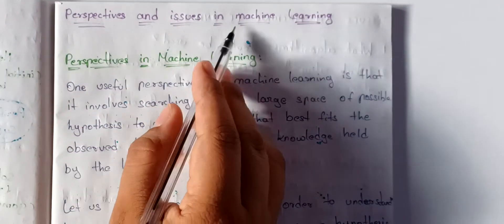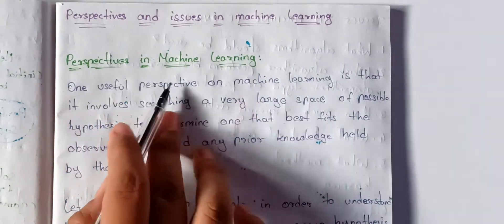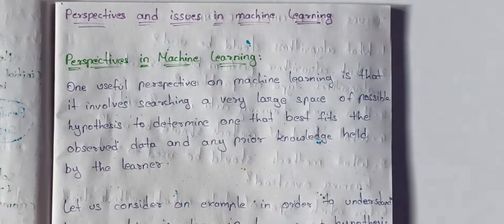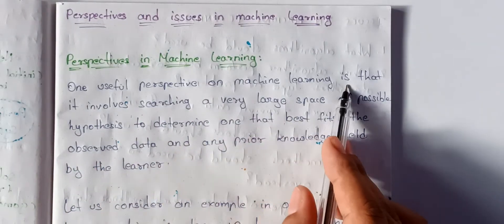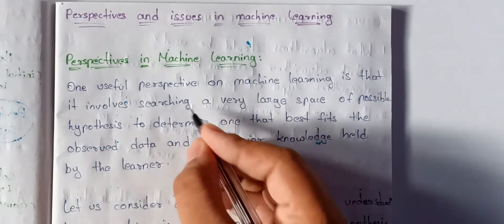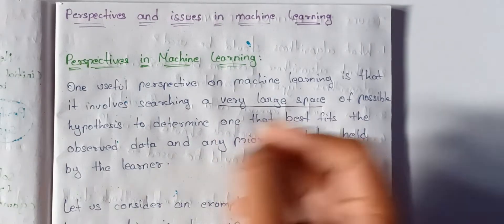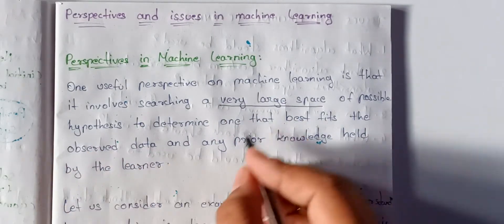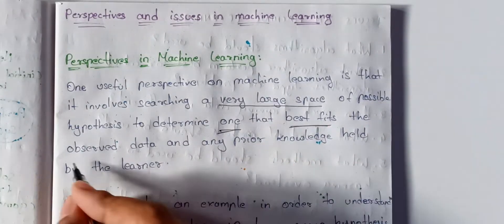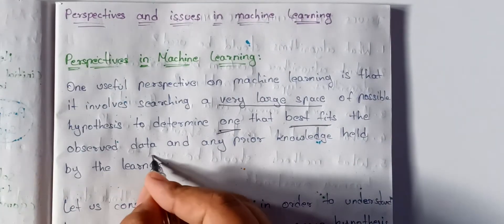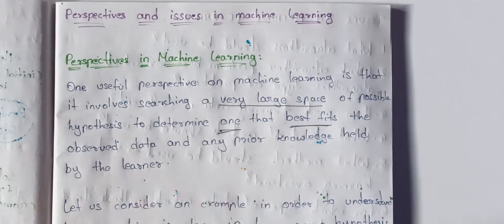Perspectives and issues in ML. First, perspectives in ML. One useful perspective on ML is that it involves searching a very large space of possible hypotheses to determine the one that best fits the observed data and any prior knowledge held by the learner.